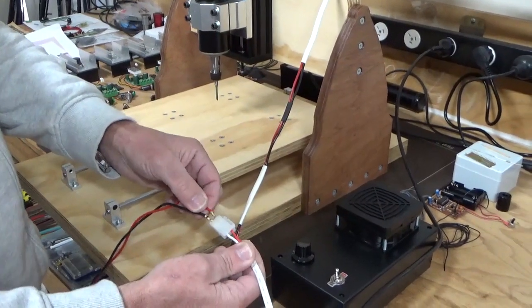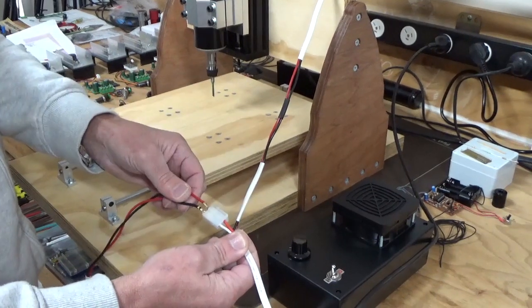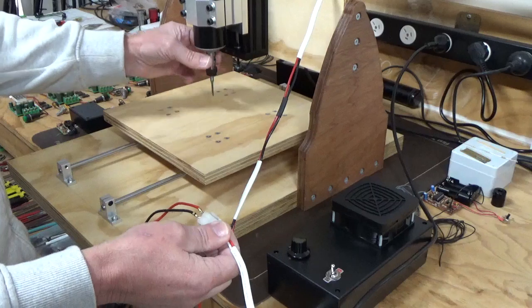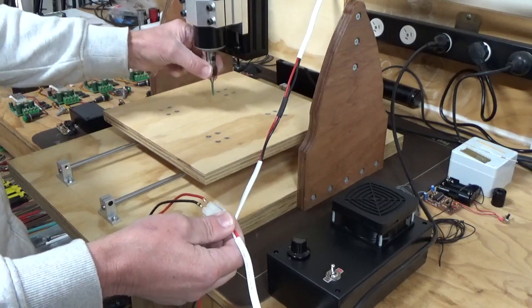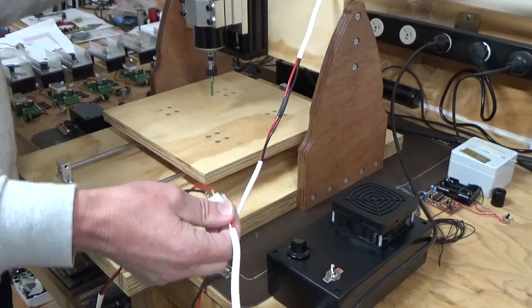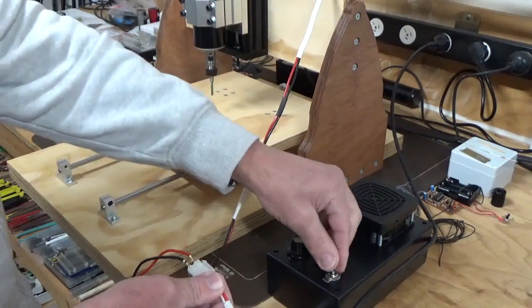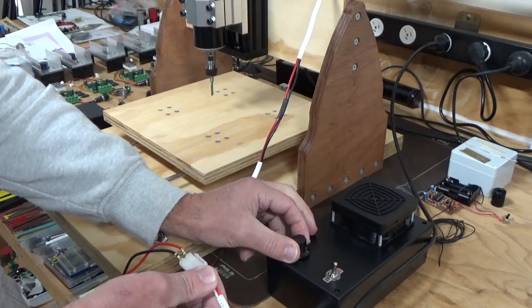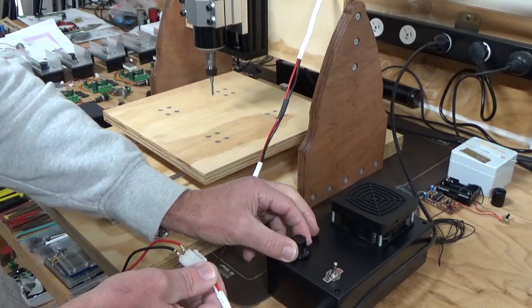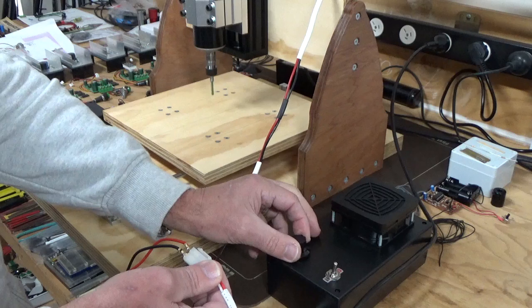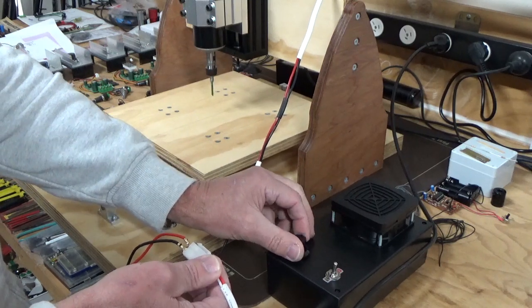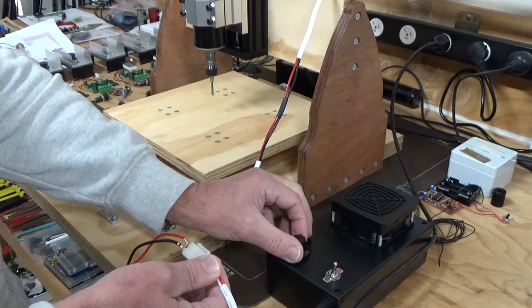What we've done is just temporarily put the spade connectors into the connector that we're using, and we just want to check that this is rotating the right way - it's got to rotate in a clockwise fashion. If we put power on, you'll hear the fans start up, and then we can put power on to the motor and adjust the speed. You can see there that it's traveling in a clockwise direction.